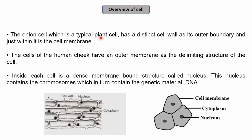The onion cell, a typical plant cell, contains a cell wall. In diagrammatic questions, we can differentiate between plant and animal cells — if a figure shows a cell wall plus a cell membrane, it is a plant cell; if it shows only a single membrane, it is an animal cell. The onion cell has a distinct cell wall as its outer boundary, and within it is the cell membrane. In human cheek cells (animal cells), there is just an outer membrane as the delimiting structure — no cell wall is present.